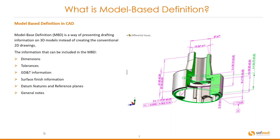Model based definition, or MBD, is a way of presenting drafting information in 3D models instead of creating conventional 2D drawings. The information that can be included in MBD models includes dimensions, tolerances, geometric dimensions and tolerances or GD&T information, surface finish information, datums and features, reference planes, and general notes.